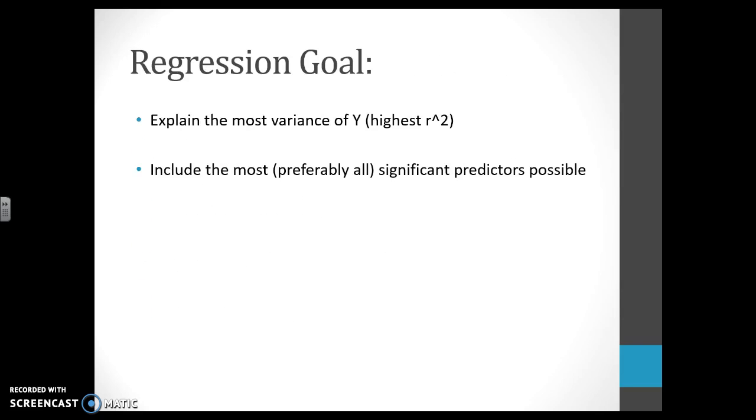Your goal in regression is two things. You want to explain the most variance of Y, which is the highest R-squared that you can find. You want the highest R-squared that includes the most significant predictors. Preferably they're all significant, but if you want to include a non-significant one because of multi-collinearity issues, then you can rationalize that. Preferably all significant predictors with the highest R-squared.